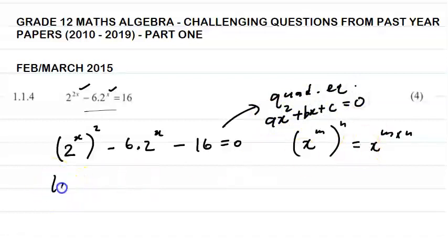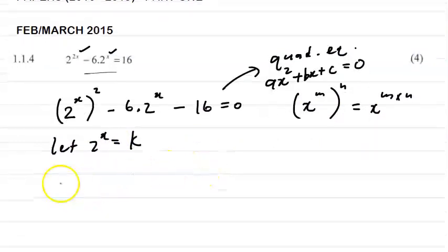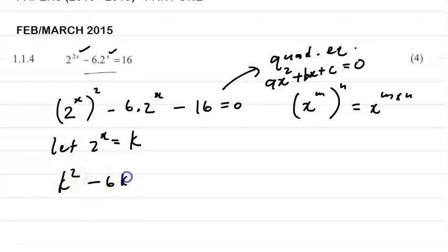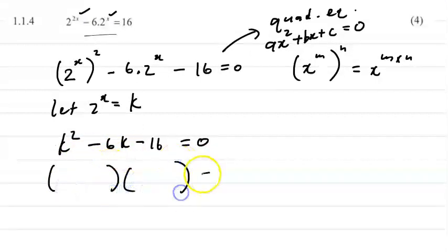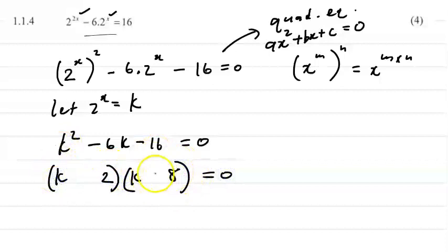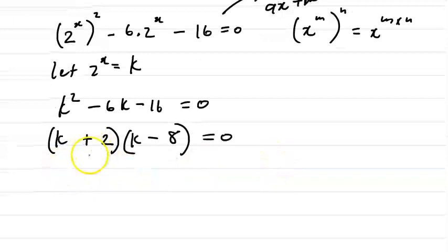So if we let 2 to the x equal k, we get k squared minus 6k minus 16 equals 0. We can now factorize this: k squared gives k times k, factors of 16 are 2 times 8, and with minus and plus signs, solving gives k equals negative 2.